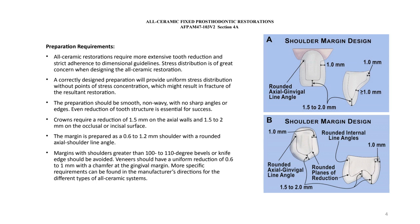The preparation should also be smooth and not present any surface irregularities, because that increases the stress transferred to the restoration when the patient bites down. Crowns in general require a reduction of 1.5 mm on the axial walls and 1.5 to 2 mm on the occlusal or incisal surfaces.